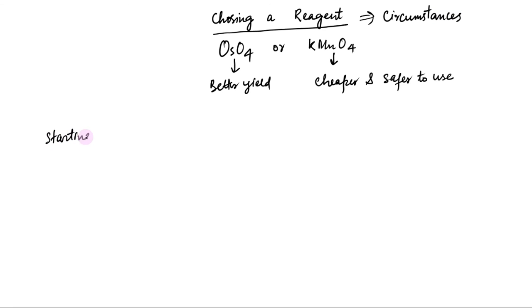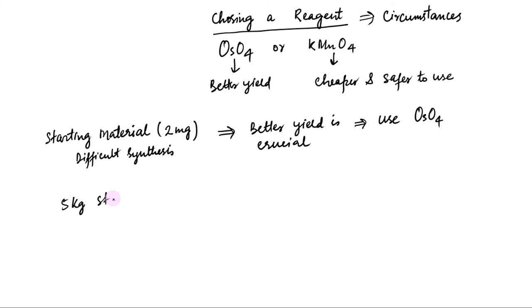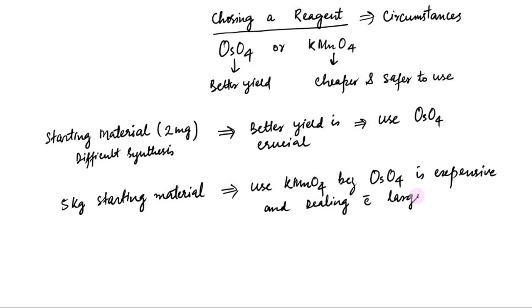If the starting material is only 2mg of a compound 15 steps along in a difficult synthesis, we use osmium tetroxide. The better yield is crucial because the starting material is precious and expensive, and little osmic acid is needed. If the dihydroxylation is the first step in a synthesis and involves 5kg of the starting material, we use potassium permanganate. The cost of buying enough osmium tetroxide would be prohibitive, and dealing with such a large amount of a volatile, toxic reagent would be inconvenient. On such a large scale, we can accept the lower yield of the permanganate oxidation.